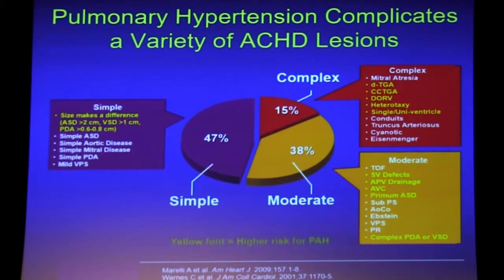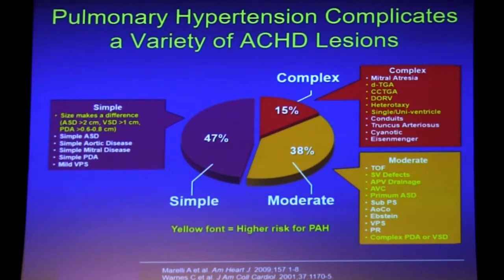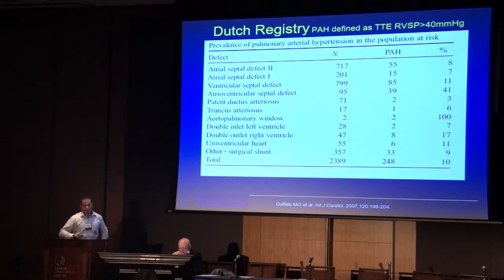The ones in yellow font are really at higher risk for PAH. Interestingly, the majority of what we'll see are actually simple defects. There's a lot of complex congenital heart disease, but if you take the whole pie, simple defects that lead to Eisenmenger's and PAH make up most of it. This is illustrated by the Dutch registry, which is a really nice registry approach.